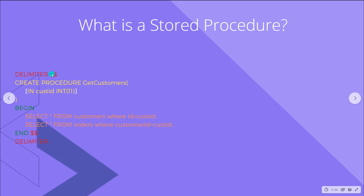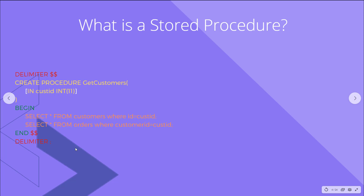First you need to set the delimiter to something other than the default. In MySQL the default is the semicolon. As you can see there are two statements that need to be separated with a semicolon, but the whole procedure needs to execute as one statement. So we set it to two dollar signs, terminate that statement, and then set the delimiter back to a semicolon. But if you're building this in ScriptCase you don't need to worry about that.